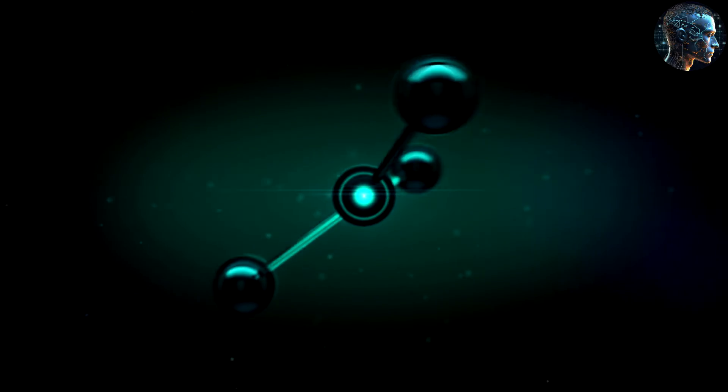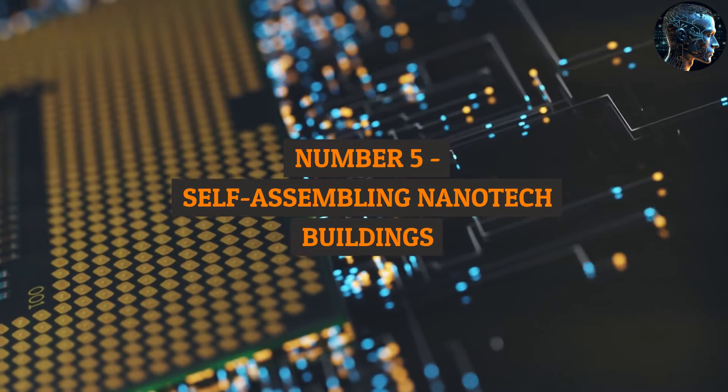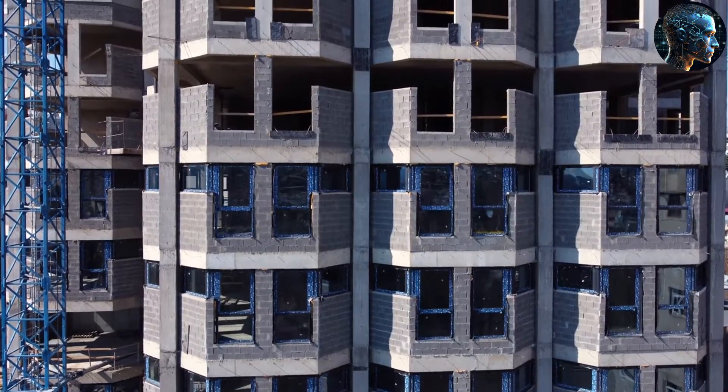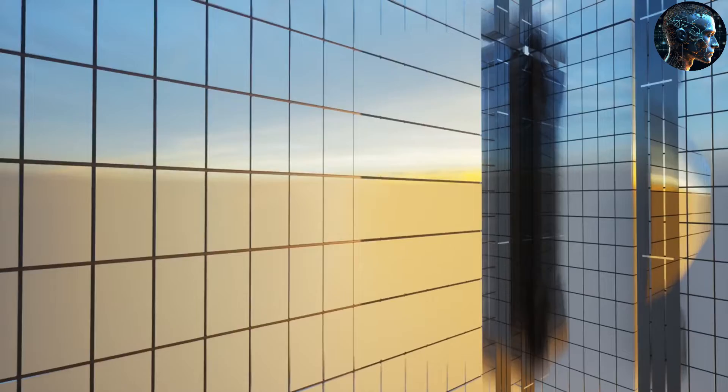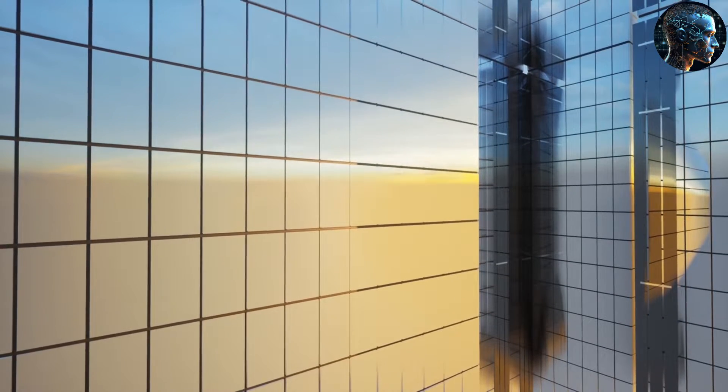Now let's turn our gaze to the skylines of 2100. The cities of the future aren't just built, they grow atom by atom. Number five: self-assembling nanotech buildings. The skyline of 2100 is shaped by nanotechnology. Buildings no longer rise through traditional construction. They self-assemble atom by atom. This technology has revolutionized architecture, making it more efficient, sustainable, and adaptable.